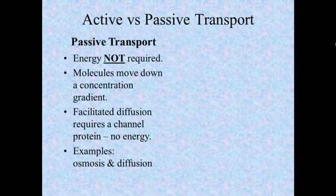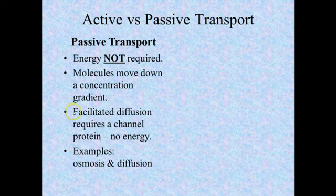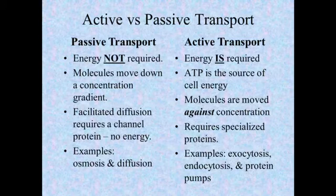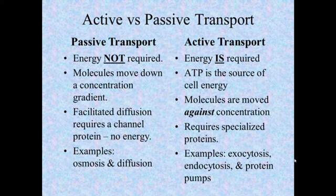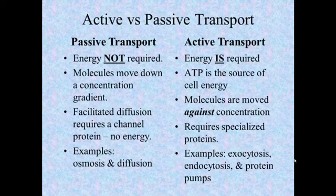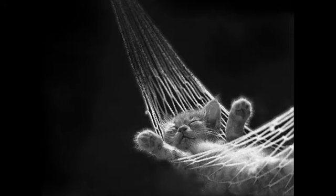Here is our quick comparison: passive transport — no energy required, molecules move down the concentration gradient; facilitated diffusion requires a channel but no energy; osmosis and diffusion are your examples. Active transport does require energy — ATP is the source of that energy. Molecules are moved against their concentration gradient, requiring protein pumps. Our examples are exocytosis, endocytosis, and protein pumps — all examples of active transport. If you're tired out from all this talk about energy and active transport, you might need a little passive rest. Hope you have a great day, this has been Mr. Galladay for Honors Biology at Desert Ridge High School.